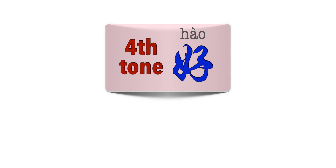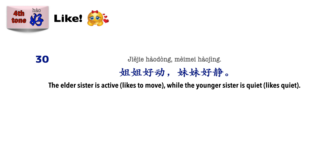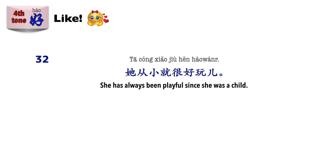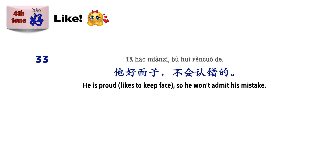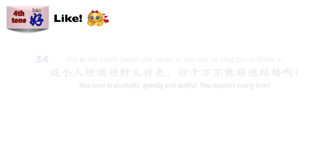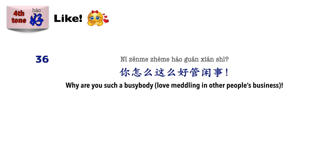Moving on to the fourth tone, 好 (hào). Fortunately, the fourth tone does not have as many uses as the third tone. In the fourth tone, it acts as a verb meaning to like or to be fond of. Examples: 你有什么爱好? 姐姐好动，妹妹好静. 真是个好学的孩子. 她从小就很好玩. 她好面子，不会认错的. 这个人好酒好才又好色，你千万不能跟他结婚啊. 你这么好吃懒做，谁敢请你呢? 你怎么这么好管闲事?